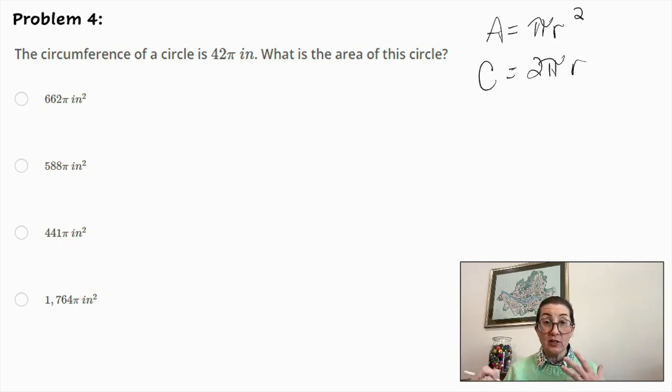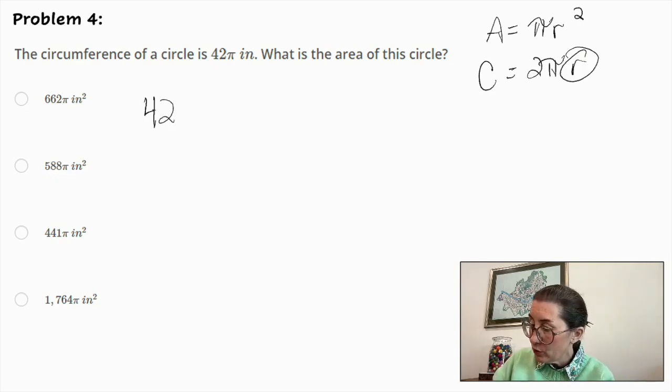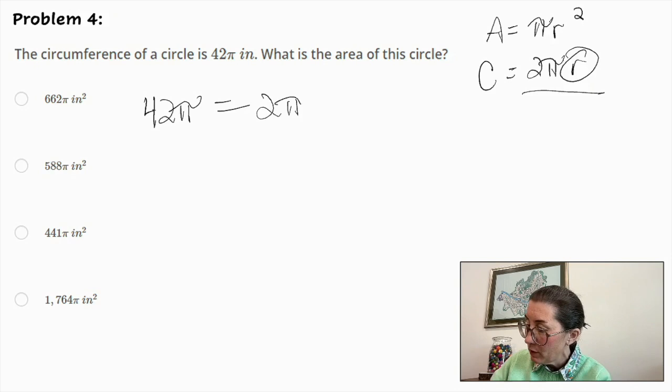So we need to find the radius, the number that is equal to the radius, in order to find the area of our particular circle. So the circumference we know of our circle is 42 pi inches. And that will be equal to this formula, 2 pi r.